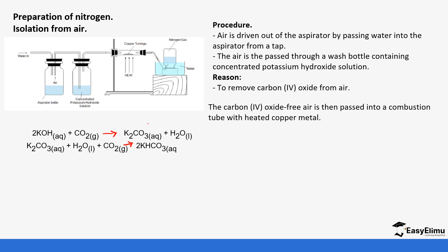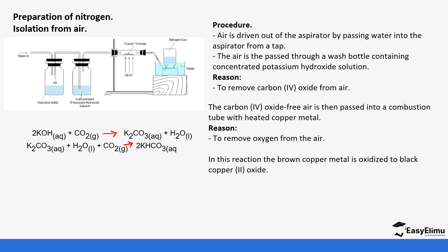The carbon dioxide-free air is then passed through a combustion tube containing heated copper metal to remove oxygen from the air. In this reaction, the brown copper metal is oxidised to black copper(II) oxide — so there is a colour change you will observe. The equation is: Cu + O₂ → CuO (black).